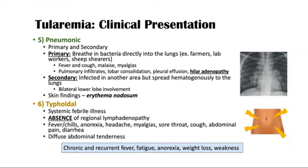The sixth clinical presentation is typhoidal tularemia. It shows systemic febrile illness with fever, chills, and malaise, but without regional lymphadenopathy. Symptoms include fever, chills, anorexia — meaning very low appetite — headache, myalgias, sore throat, cough, abdominal pain, and diarrhea. These symptoms collectively indicate the presence of this disease.